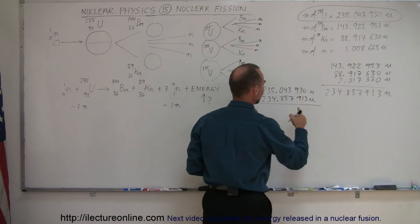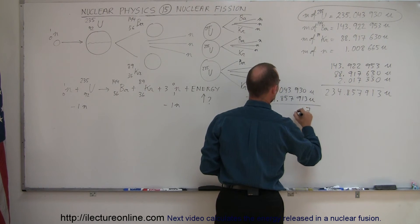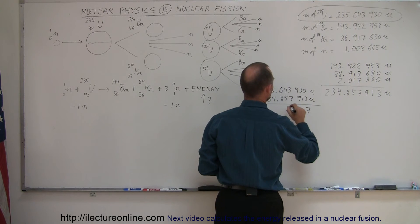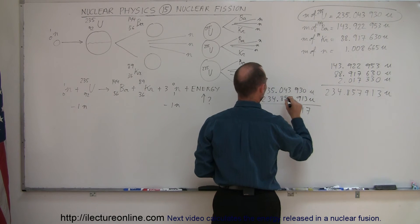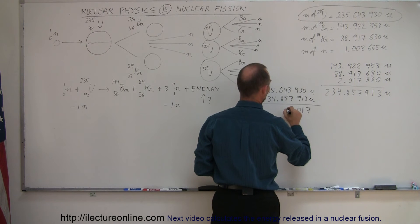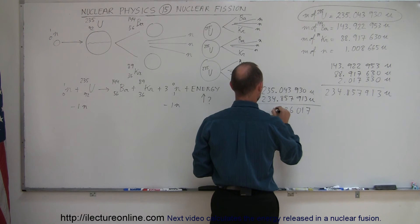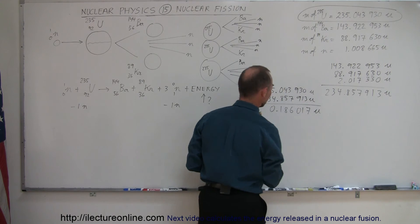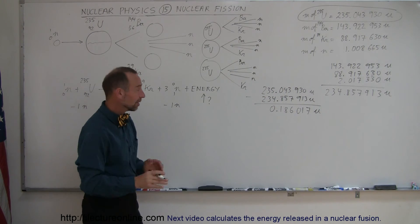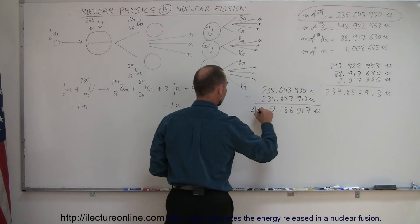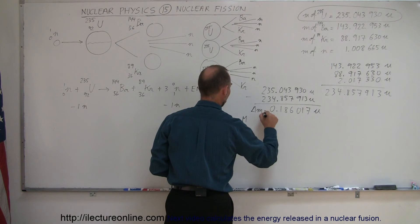So, subtract those. The result is 0.186017. That is the difference in the mass. That's the delta mass, also known as the mass defect.